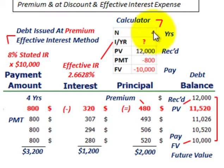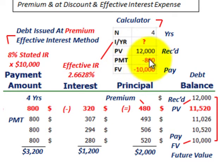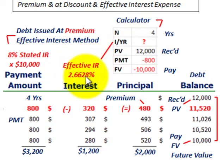In the calculator, we enter four years for the number of periods. The present value is $12,000 — the amount we received. The payment amount is $800 — the annual cash payment — entered as a negative number. The future value is $10,000 — the maturity value of the loan — also entered as a negative number. Hit your interest button and you'll come up with an effective interest rate of 2.6628%. That's the effective amount of interest we're paying on this loan each year.